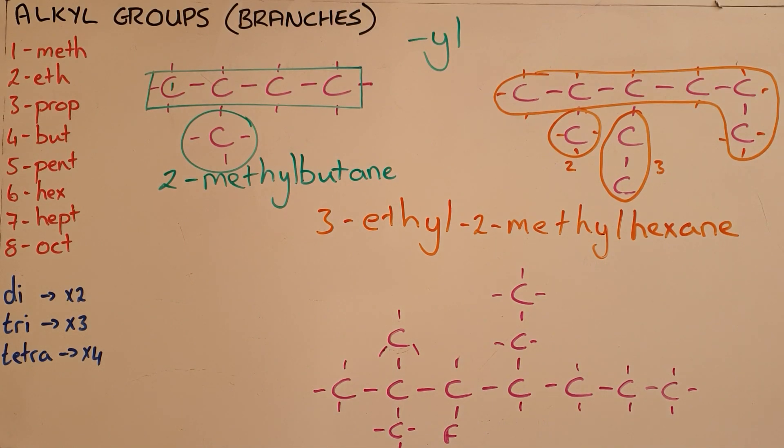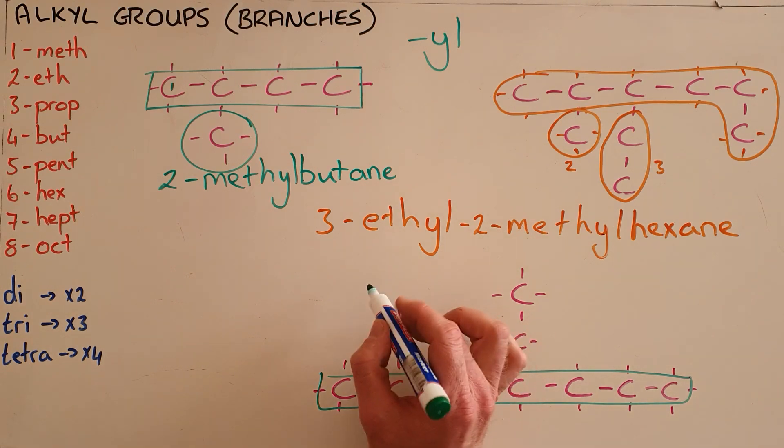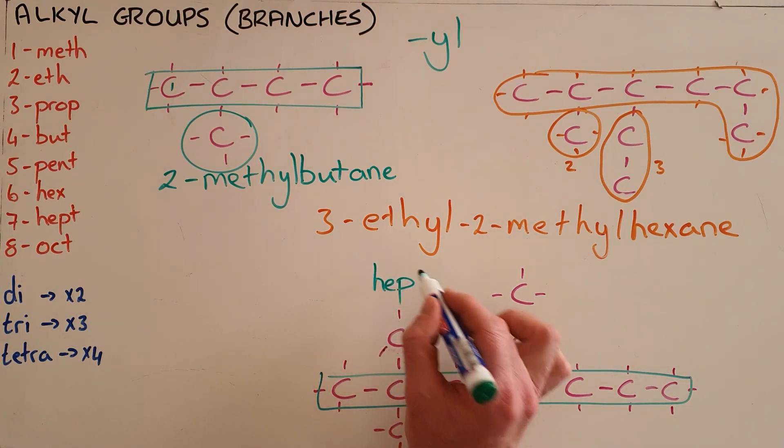We can do the same thing where we remember that the halogen branches are also considered branches and are therefore of equal importance. So once again we identify our longest carbon chain that here is seven carbons and therefore we are dealing with a heptane molecule.